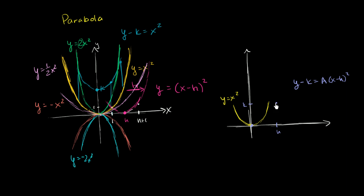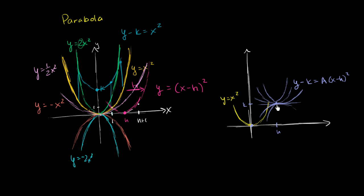If a equals 1, it looks the same as the original. If a is greater than 1, it's steeper. If a is between 0 and 1, it's wider. If a equals 0, it becomes a flat line. If a is between 0 and negative 1, it's a broad downward-opening parabola. At a equals negative 1, it's a reflection of the original. And if a is less than negative 1, it's a steep downward-opening parabola.